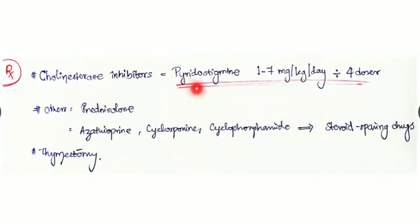We give cholinesterase inhibitors like pyridostigmine, around 1 to 7 mg per kg per day in 4 divided doses. As a result, destruction of acetylcholine by cholinesterase enzyme is prevented, increasing acetylcholine concentration by giving pyridostigmine.